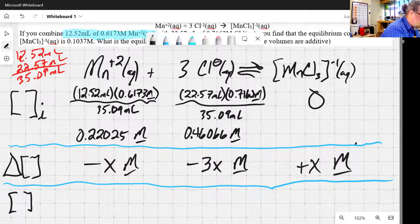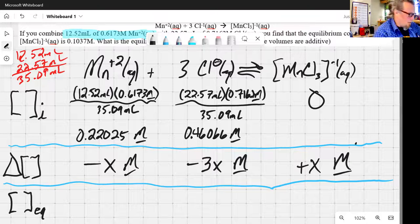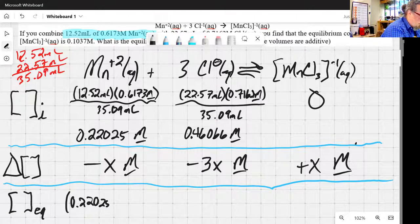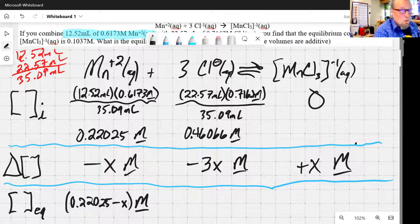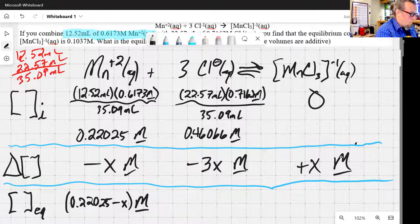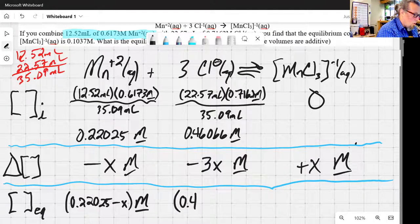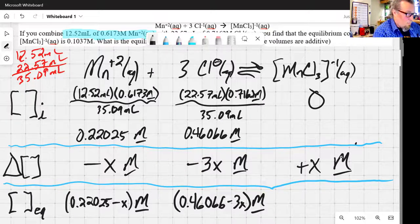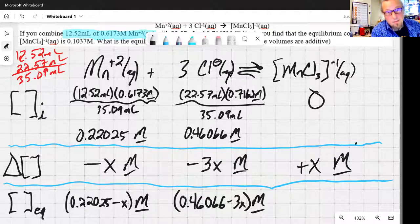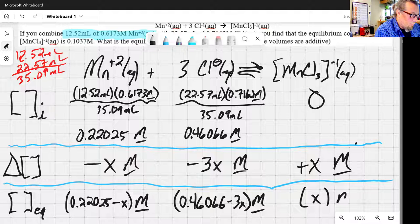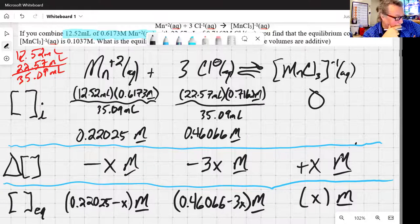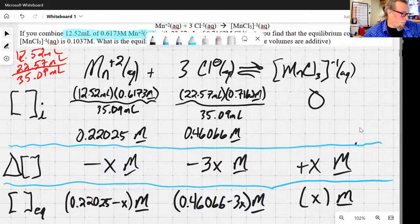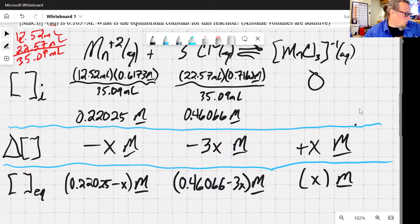So let's take this one more step. And now, what are my equilibrium concentrations? Well, my equilibrium concentration of manganese is going to be 0.22025 minus X molar. That minus that. My chloride concentration is going to be 0.46066 minus 3X molar. And my manganese trichloride concentration is going to be 0 plus X molar.